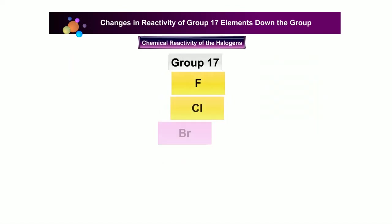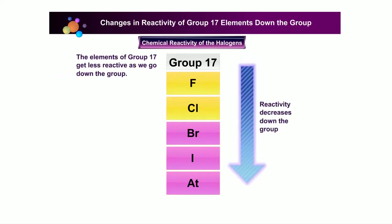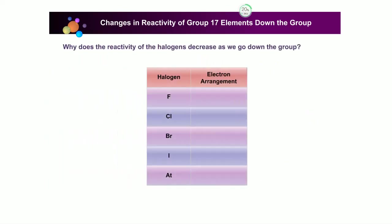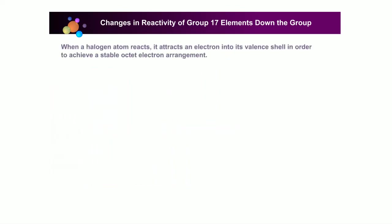The elements of group 17 get less reactive as we go down the group. The number of occupied electron shells increases down the group, and the atomic radius also increases down the group.